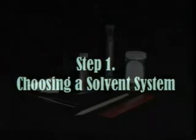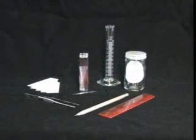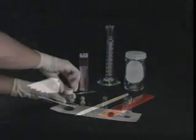Before you can run a column, you need to decide on the appropriate conditions. It is vital that you pick a solvent system that will provide good separation. In general, you will use a mixture of two miscible solvents, one polar and one non-polar. Luckily, TLC is an effective tool for deciding on the optimal solvent system for your sample.